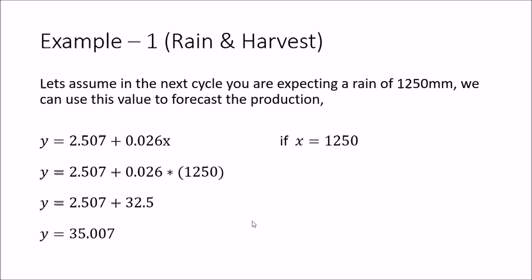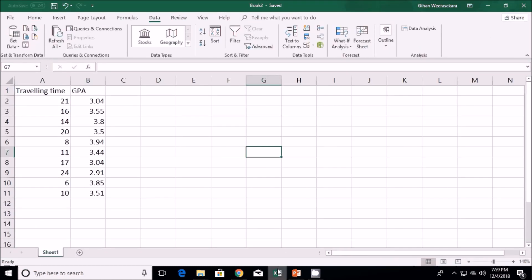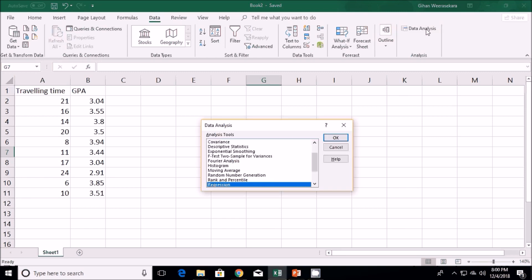Next we will look at the second example. In this one we are going to use Excel to find the regression equation. These are the two variables we are using, and first there needs to be a correlation — we found the correlation to be minus 0.768, which is a strong negative correlation. Because of that strong negative correlation, we can go forward and find the linear regression equation. I'll now open Excel with the traveling time and GPA data, and use the Data Analysis toolpack.